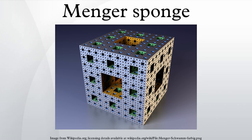Each face of the Menger sponge is a Sierpinski carpet. Furthermore, any intersection of the Menger sponge with a diagonal or median of the initial cube M₀ is a Cantor set.